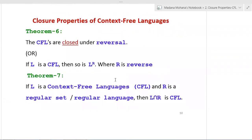Theorem 6 or closure property 6: context free languages are closed under reversal. Formally, if L is a context free language, then its reversal is denoted by L^R, where R stands for reverse. So CFLs are closed under reversal.